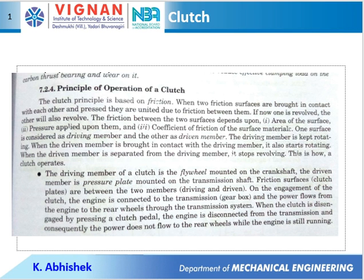Now if one of them is called as a driving member and the other is a driven member, whenever the driving member will rotate, the driven member will rotate along with it due to the friction between them. The driving member is kept rotating, which in our case is the engine crankshaft, and the driven member is brought in contact with the driving member — it also starts rotating. Engine crankshaft has a flywheel mounted on it, and the driven member has pressure plates mounted on the transmission shaft. When the friction surfaces of the clutch are in contact, that means the clutch is engaged. The driving and the driven members rotate together and the power is transmitted to the rear wheels.